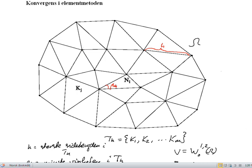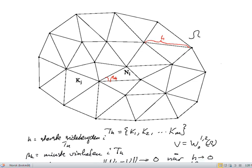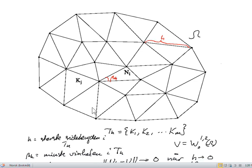This is a difficult task but we are going to say some words about it. If we have a triangulation like this T_H consisting of K1, K2 up to Km, where these are the interiors of the triangles and their union equals omega.